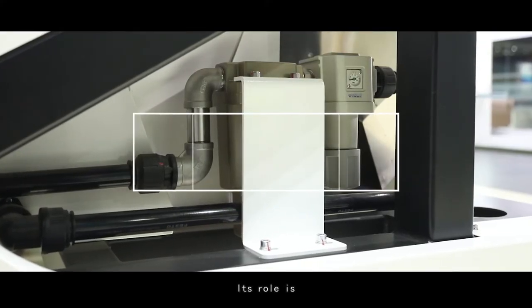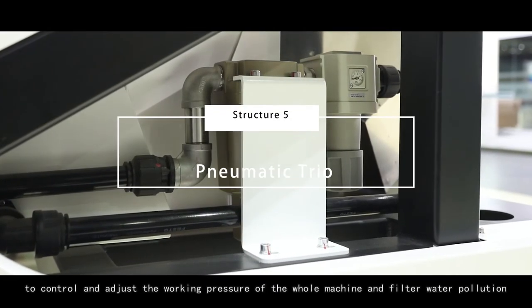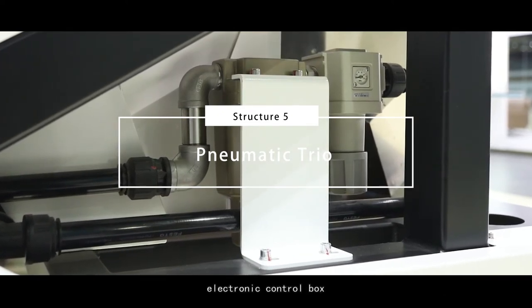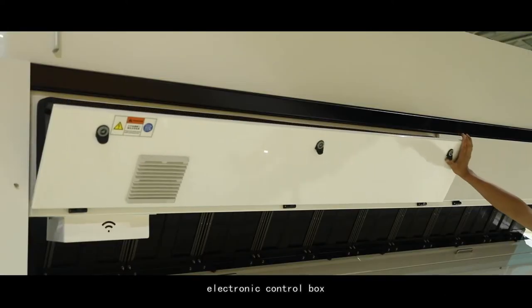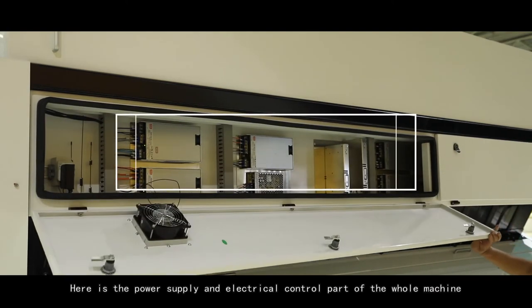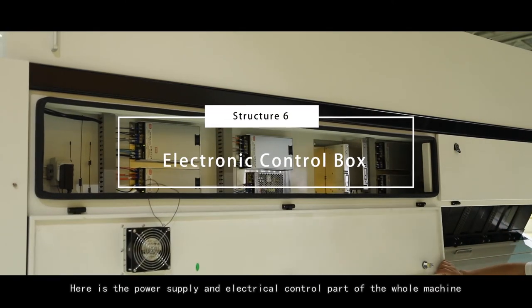Pneumatic Trio. Its role is to control and adjust the working pressure of the whole machine and filter water pollution. Electronic control box. Here is the power supply and electrical control part of the whole machine.